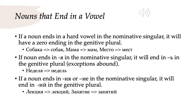So собака will become собак, мама will become мам, место will become мест. In this situation, most unusually, feminine and neuter nouns have the same ending. Normally masculine and neuter nouns have the same ending, but in the genitive plural, feminine and neuter nouns form a group. So it doesn't matter if the final vowel is an -а or an -о, it doesn't matter if the noun is feminine or neuter — in the genitive plural you're going to drop that -а or -о and have a zero or bare ending. If the noun ends in -я in the nominative singular, it will drop that -я and end with a soft sign in the genitive plural, keeping the softness of the final consonant. So недéля, for example, will become недéль. This is the rule, but in fact there are many exceptions, so keep your eyes open for them.